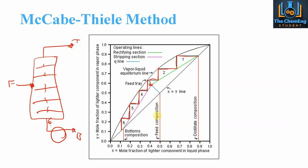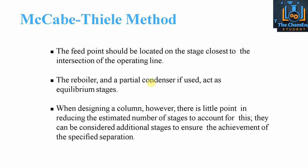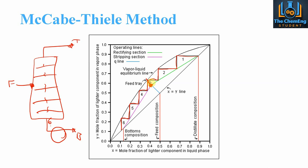We use the given data, apply the mass balance, and create this graph. The feed point should be located at the stage closest to the intersection of the operating lines — that's why we chose tray 3. The reboiler and partial condenser, if used, act as equilibrium stages themselves. This is the minimum number of trays required; adding more trays increases purity and ensures separation targets are met, though it increases cost.